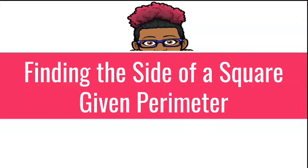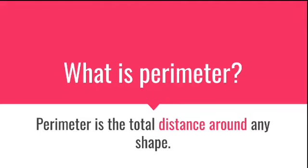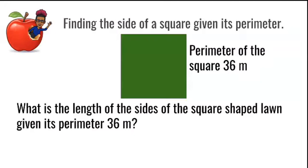Welcome to the lesson: finding the side of a square given its perimeter. Let's recap — what is perimeter? Perimeter is the total distance around any shape. Now let's begin our lesson.